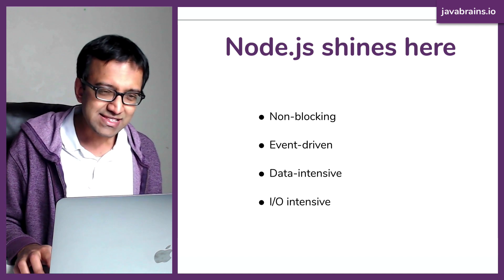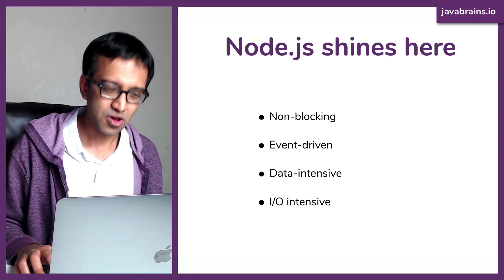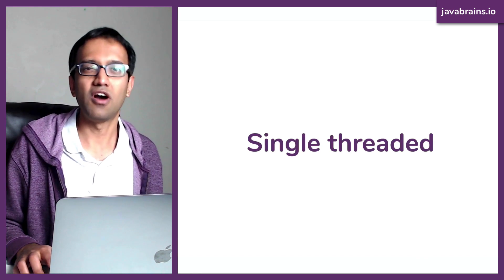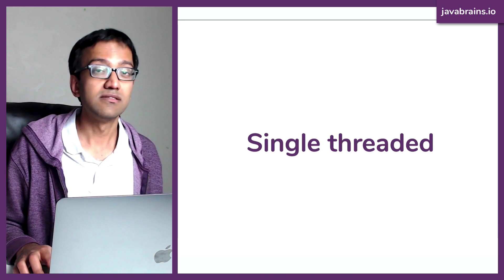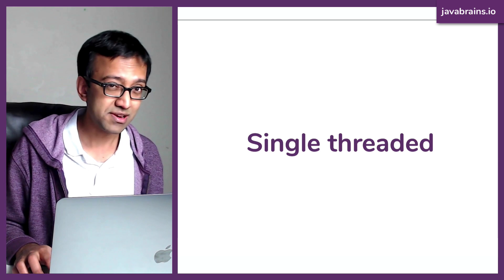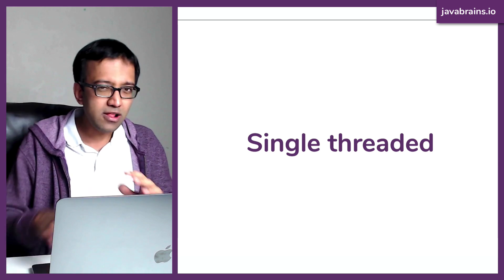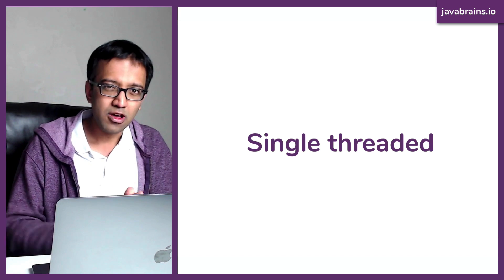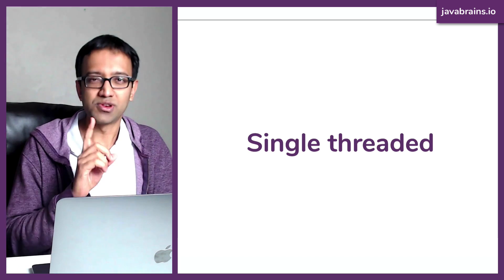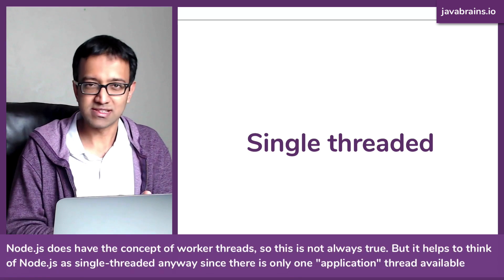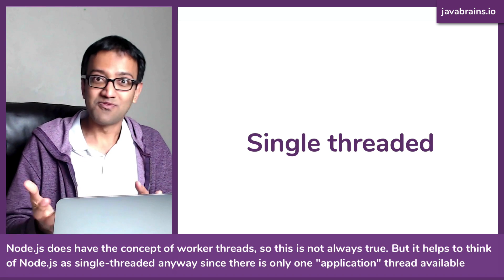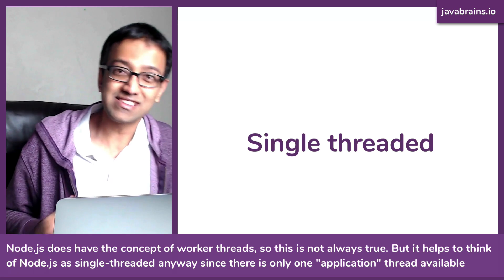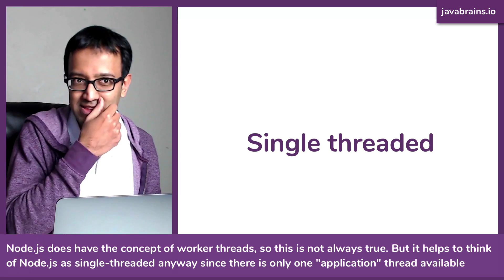To understand why this is so, it's important to understand one important aspect of Node.js: it is single-threaded. What does single-threaded mean? It means that all the execution that happens in a Node.js environment is carried out by one computer thread, one processing thread. This is where a lot of people express shock — just one processing thread? That's going to block everything else.